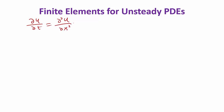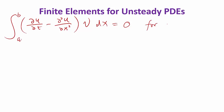We project the residual of the equation into a basis or into a function space. That means the left-hand side minus right-hand side times a v, integrated in the spatial domain a to b, has to be zero for any v. This has to be zero for all time.